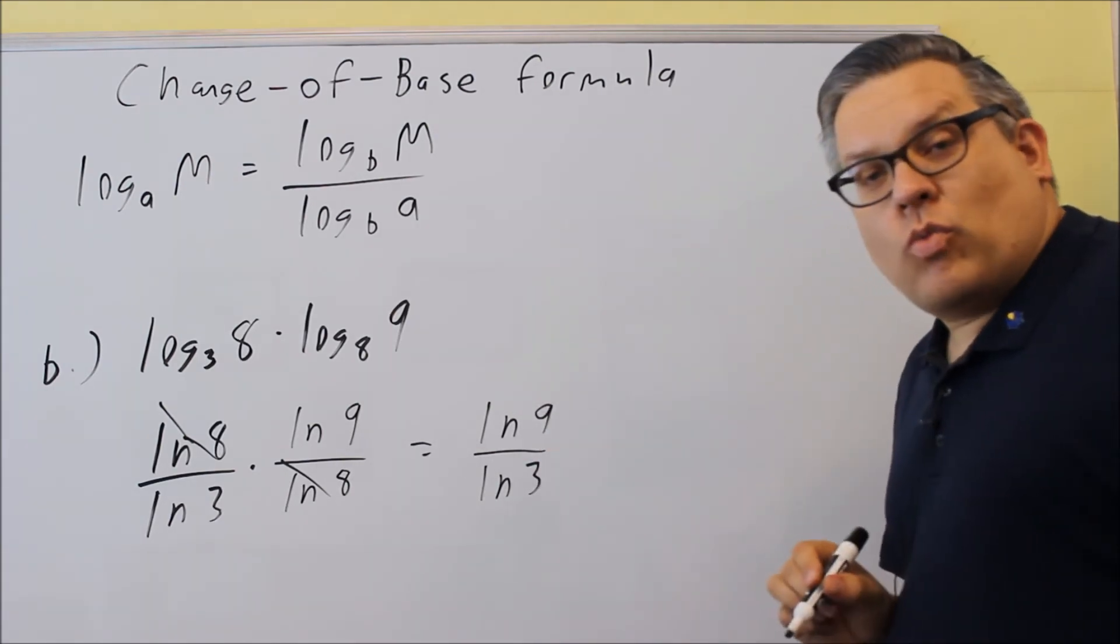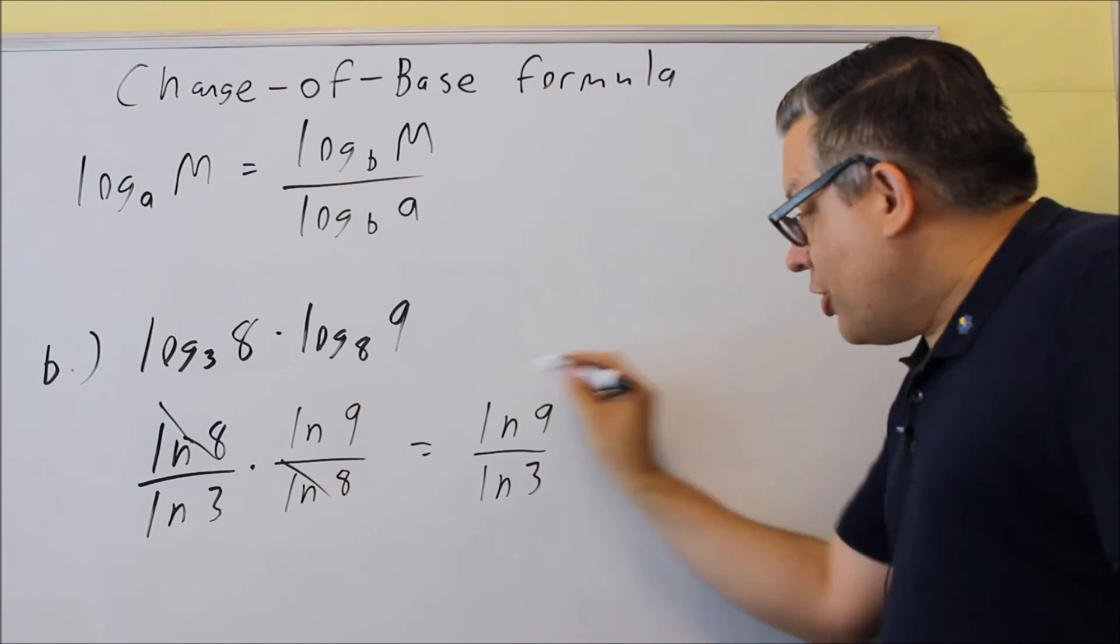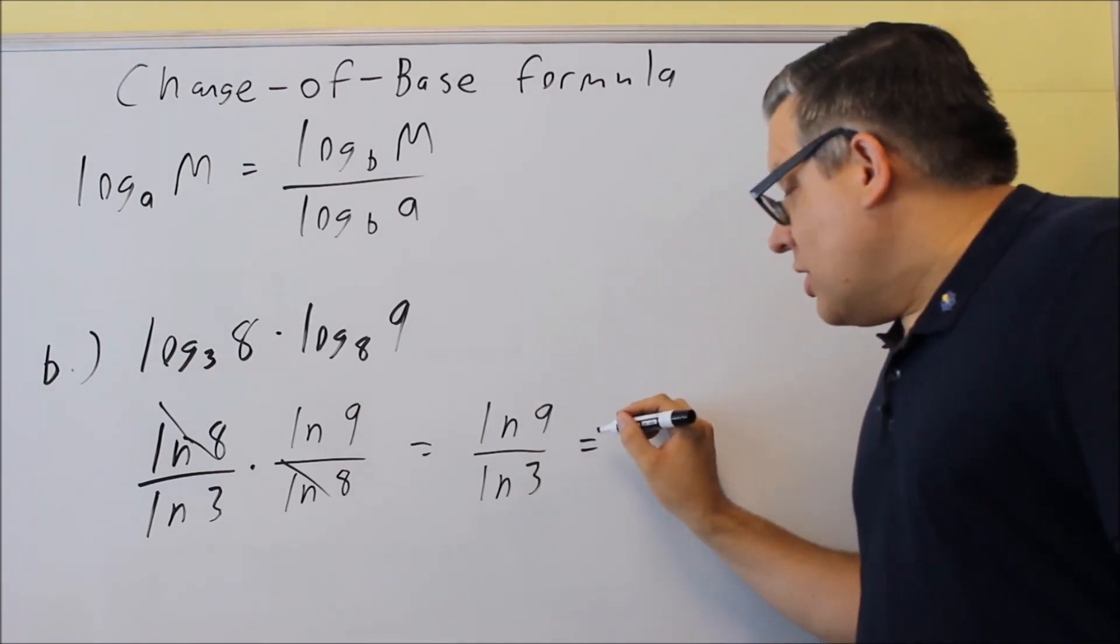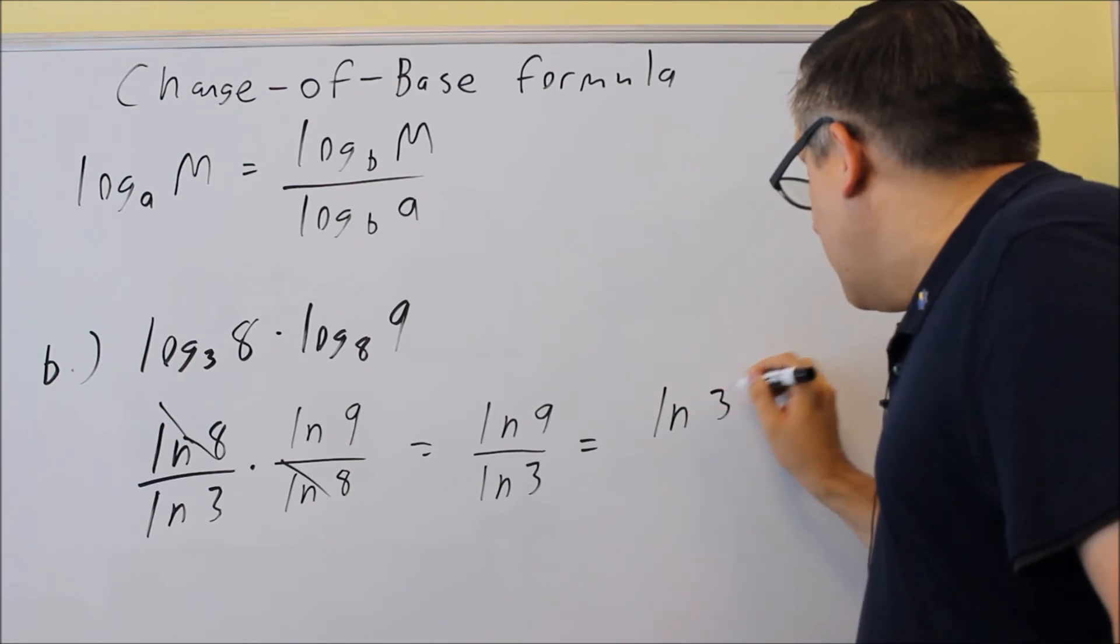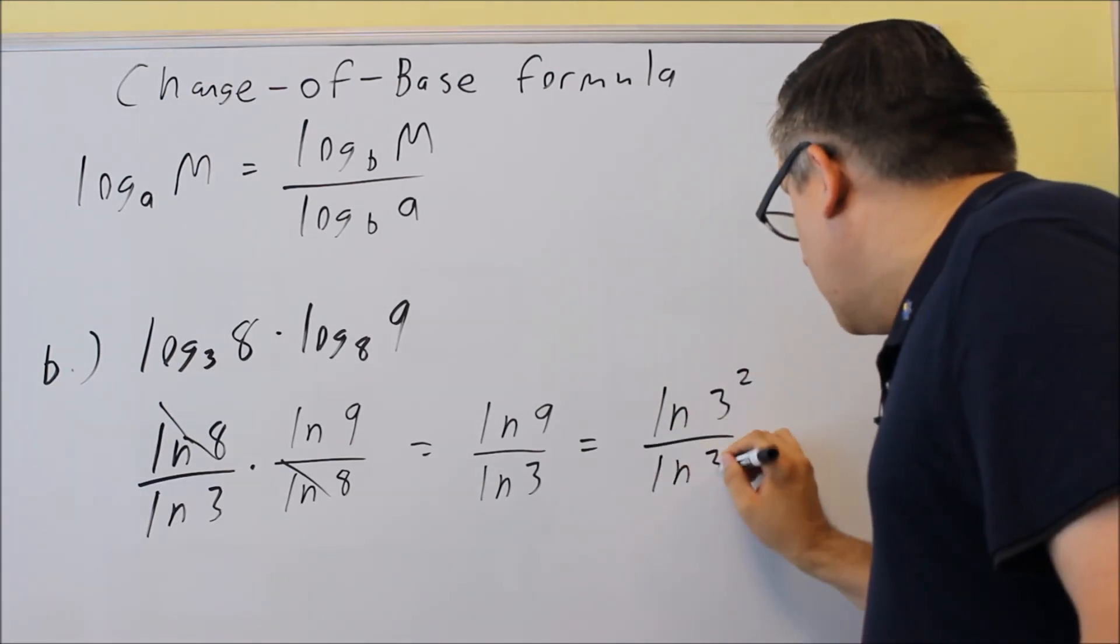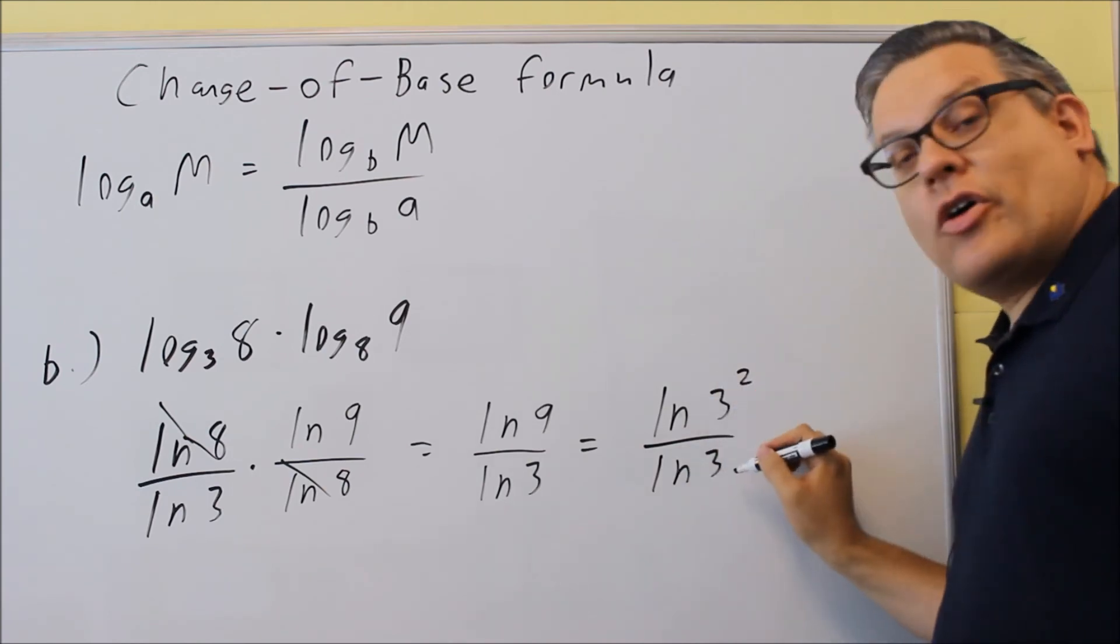Now I could put this into my calculator, but there's actually a way that we can do this working with log properties where you don't even have to use a calculator on this one. So what I can do on this is I'm going to change the 9 into 3 squared because that way I get an LN 3, just like the LN 3 on the bottom.